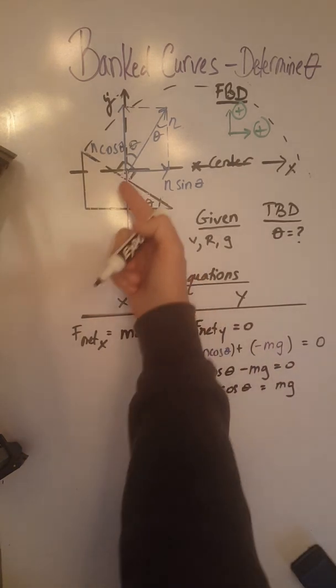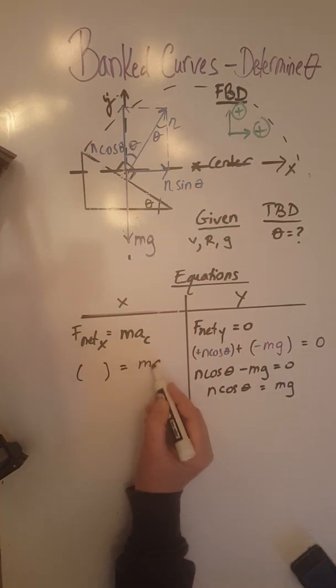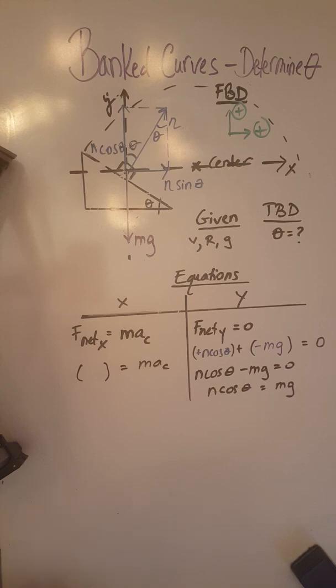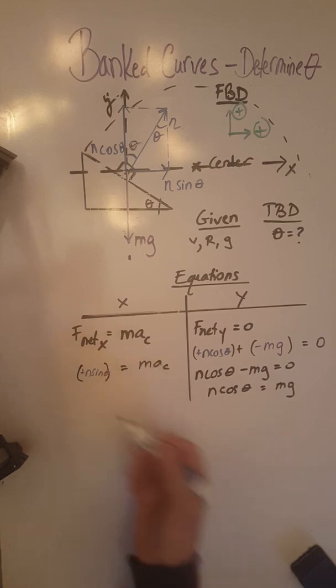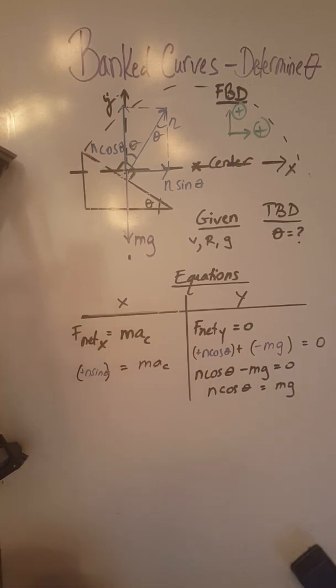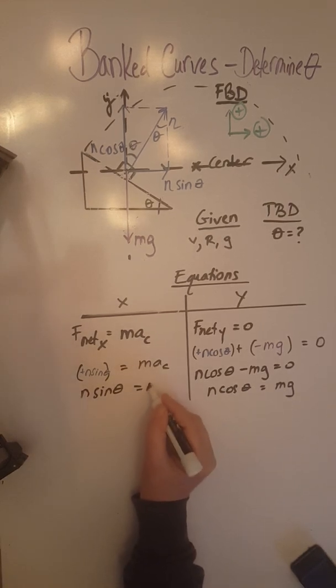For F net x, we only have one force. That must be equal to m a_c and that one force is positive n sine theta. When we simplify this, we end up with n sine theta equals m a_c.